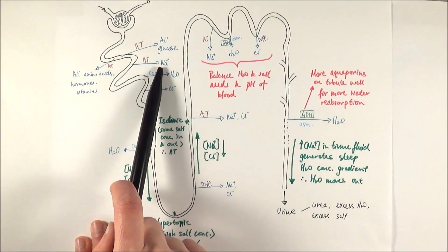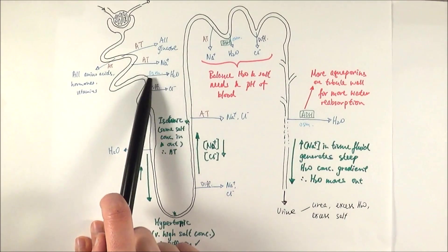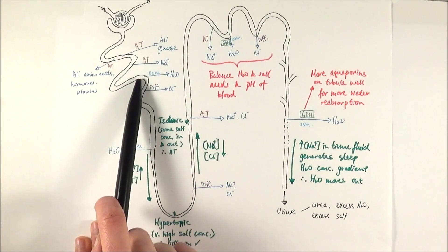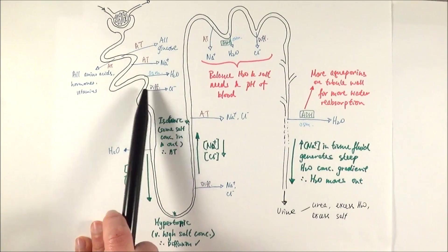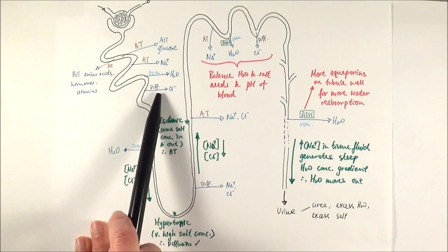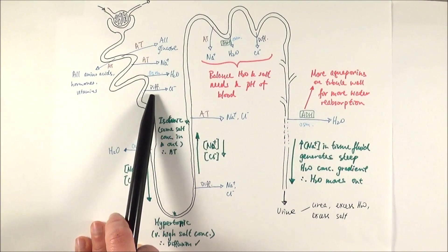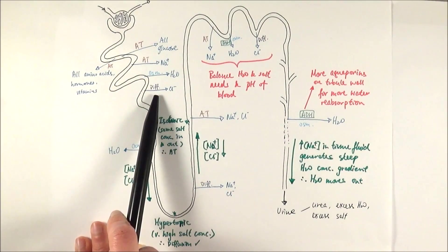Some of the sodium ions are also reabsorbed by active transport. The water follows by osmosis because of the change in concentration. Chloride ions also move out by diffusion because of the concentration difference between the filtrate and the tissue fluid around it.